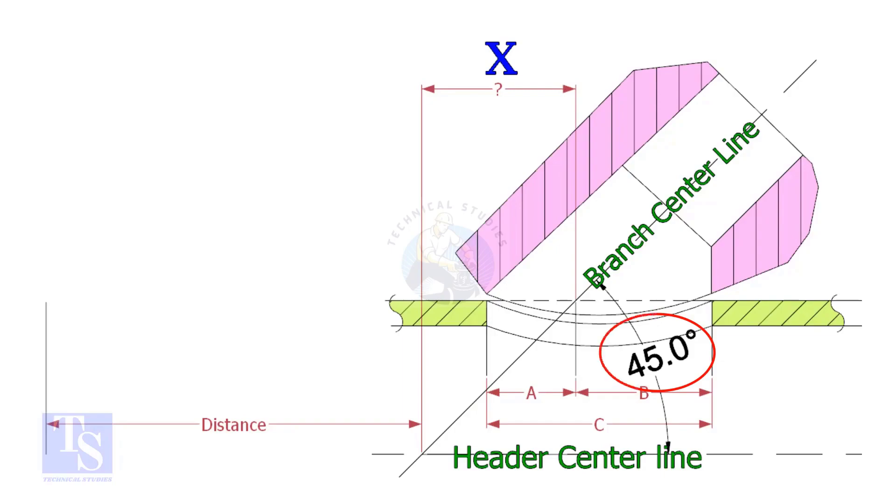If the including angle is 45 degrees, the value of X will always be half OD of the header. Suppose the OD of the header is 400mm, then the value of X will be 200mm. Mark the half OD in the direction of the laterolette. Mistakes happen when marking the direction of the laterolette.